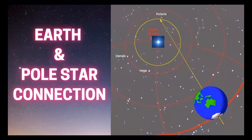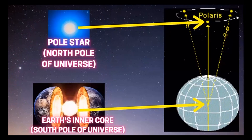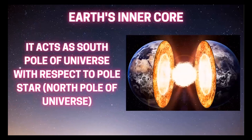This is the position of Earth and Polestar in the universe. Polestar is on the top, acting as the North Pole of the universe, and Earth's inner core is on the lower side, acting as the South Pole of the universe. Earth's inner core acts as a South Pole of the universe with respect to Polestar, and Polestar acts as the North Pole of the universe.